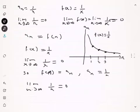As you can see, the function goes to 0 and the sequence goes to 0 as n goes to infinity as well, because the function equals the sequence at n equals 1, 2, 3, and so on.